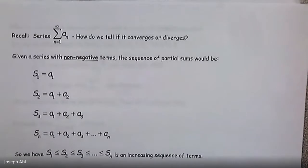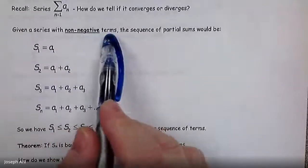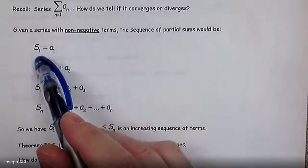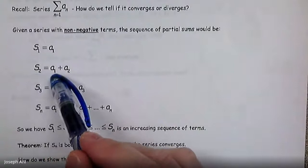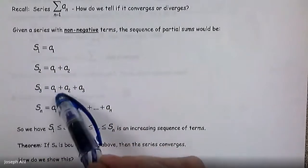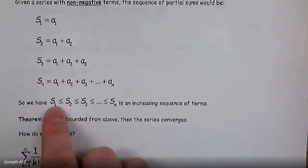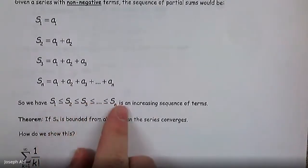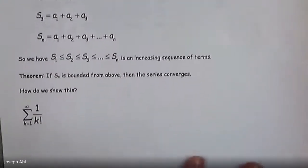Recall that for a series, how can we tell if it converges or diverges? One of the things we're going to look at are partial sums. Given a series with non-negative terms, the sequence of partial sums would look like the following: the first term alone, then S2 equals a1 plus a2, S3 equals the sum of the first three terms, and so on. Because these are non-negative terms, the partial sums form an increasing sequence.